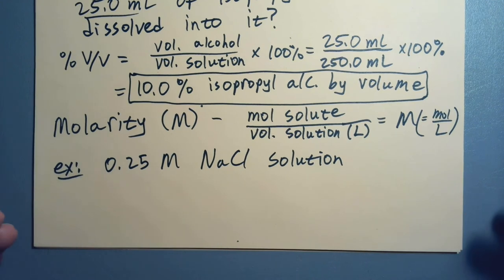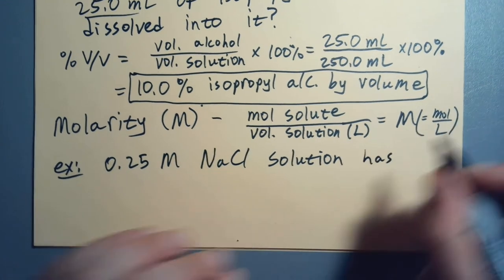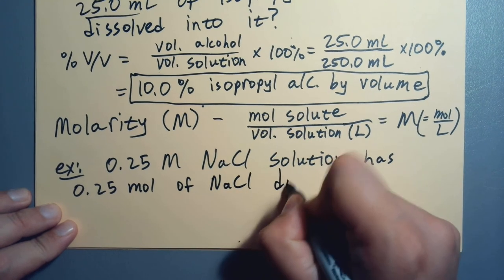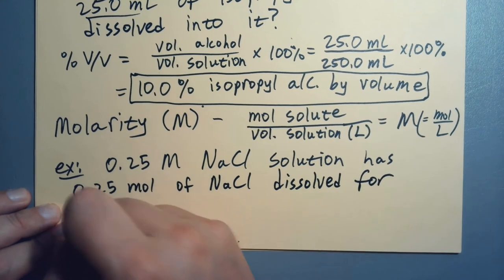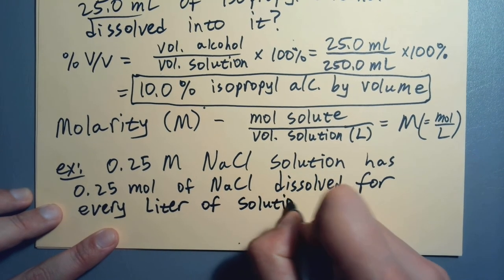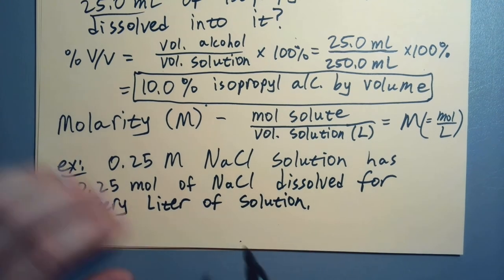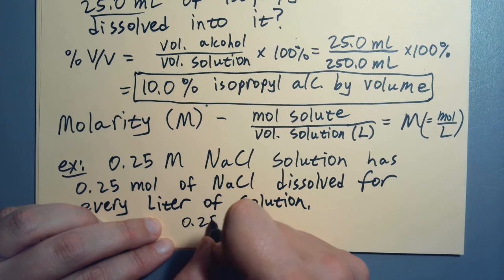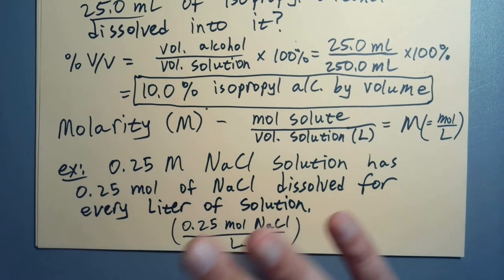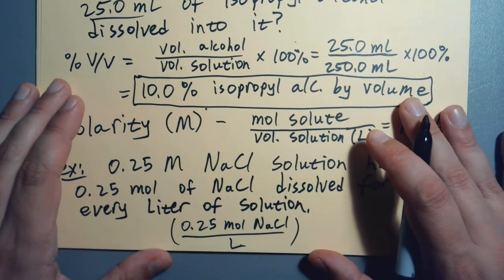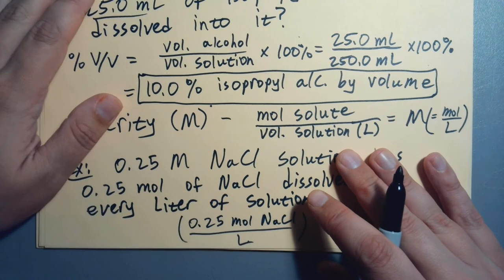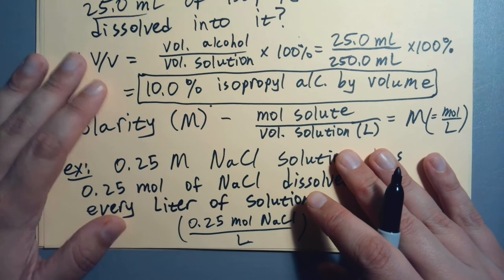If we've got a 0.25 molar NaCl solution, that means it has 0.25 moles of NaCl dissolved for every liter of solution. That's our conversion factor. And I'm going to do a whole video where we just play around with molarity and do practice calculations. Because this is one that we can go forwards, backwards, sideways, up, down. I'm going to expect more out of molarity than the first two units.